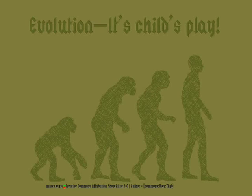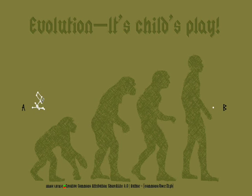Example 1: No natural selection — the Strawman fallacy. This is how creationists like to describe evolution. As you may expect, random mutations take us nowhere.